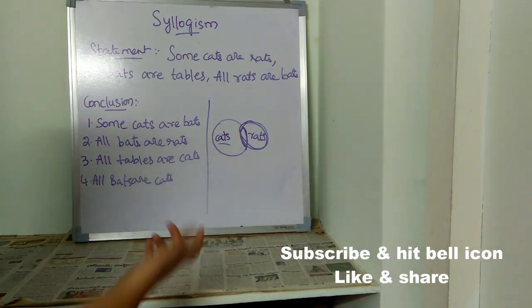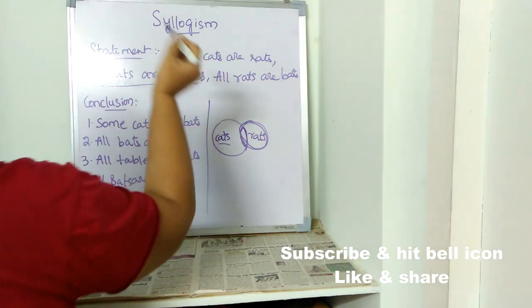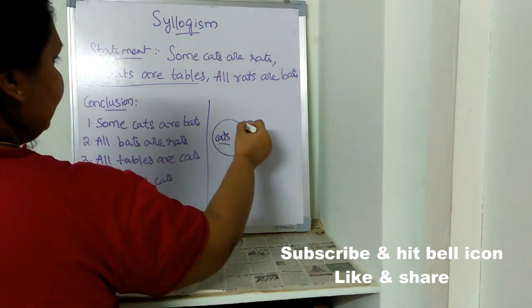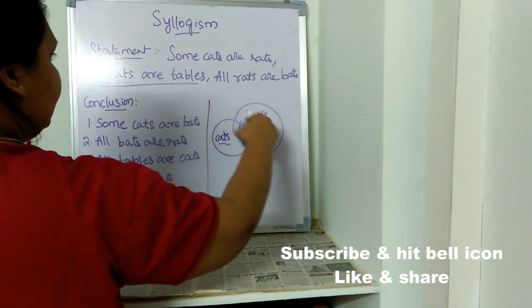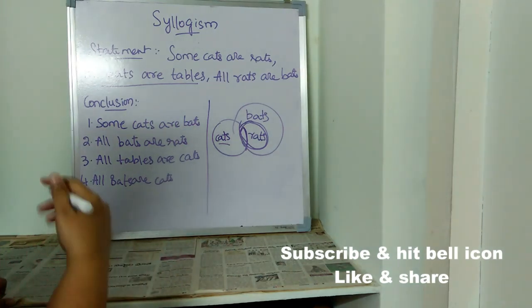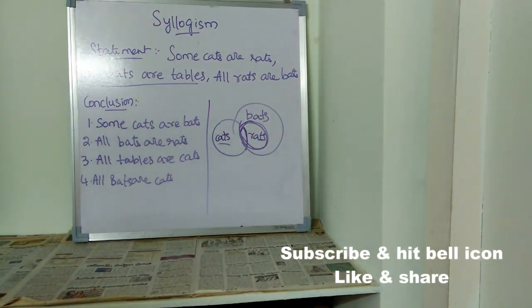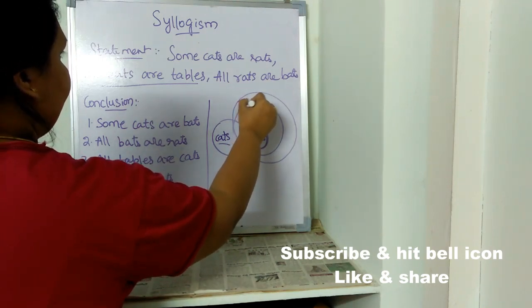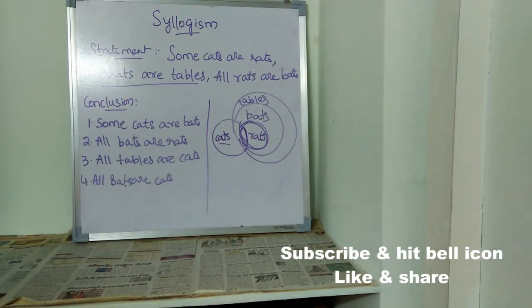Next, for 'all bats are tables,' we currently only have cats and rats in our diagram, so let's set that statement aside and first look at the third statement: all rats are bats. This means all the rats are bats, so I've covered the entire rats circle and placed it inside bats. Then for the second statement, all bats are tables, I've covered bats and placed it inside tables, because all the bats are tables.